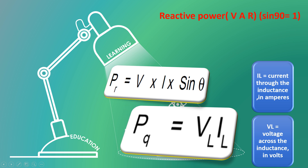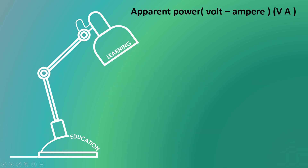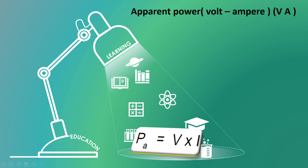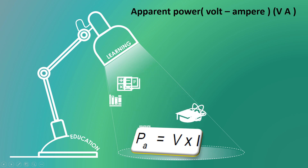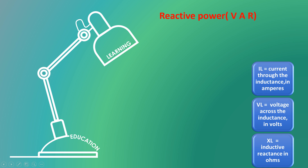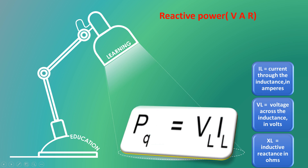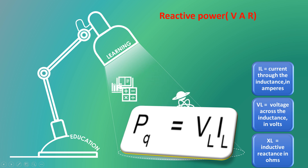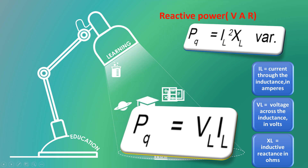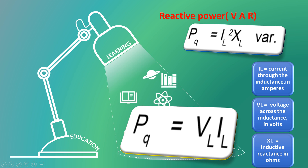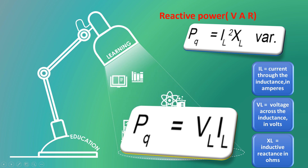VL means voltage across the inductance in volt. The formula to find apparent power equals to V into I, where V means voltage, I means current. The reactive power is VL into IL. One more formula is reactive power equals to I square XL. The unit of reactive power is volt ampere reactive (VAR). There are 2 formulas for reactive power.